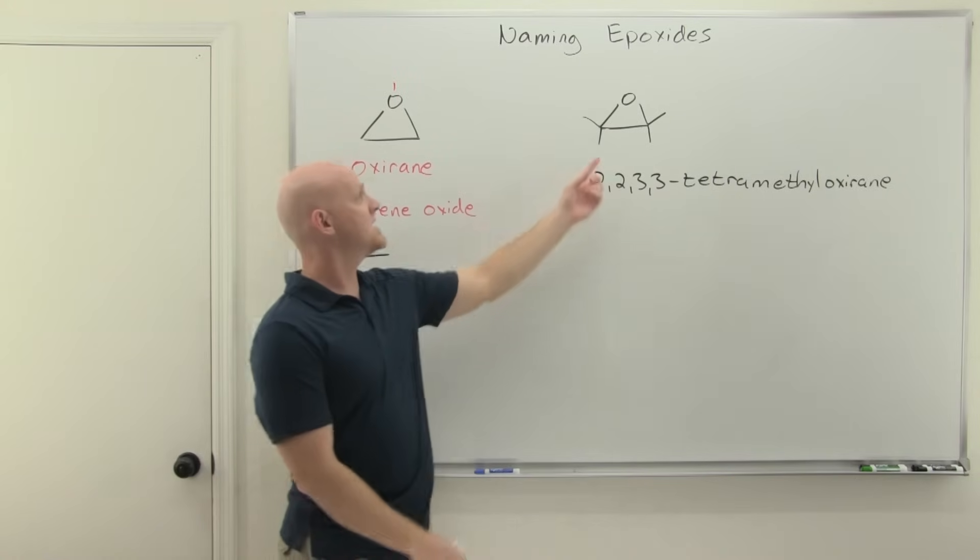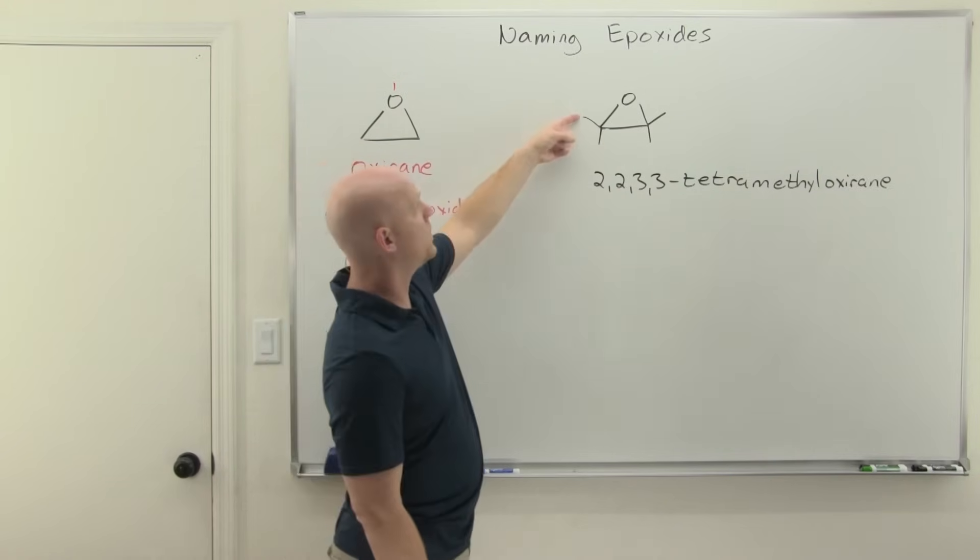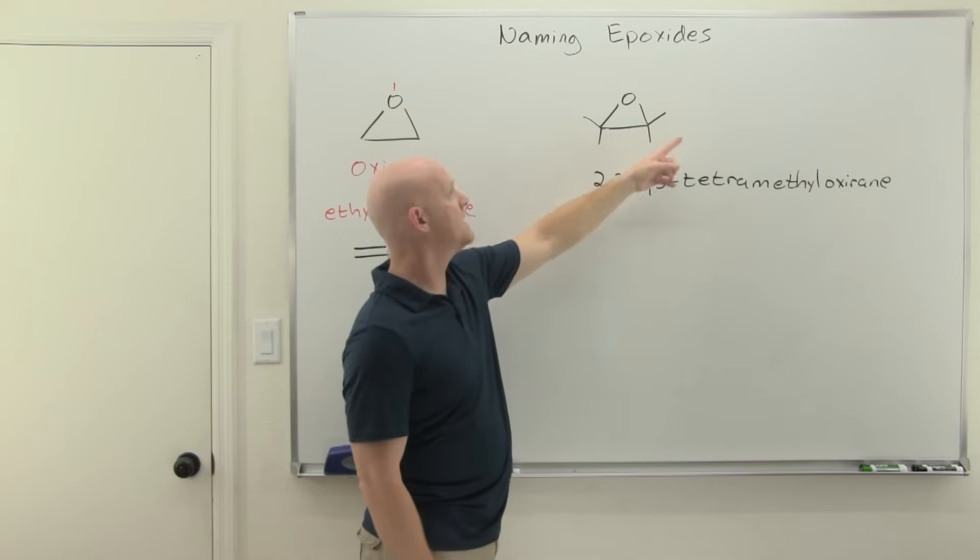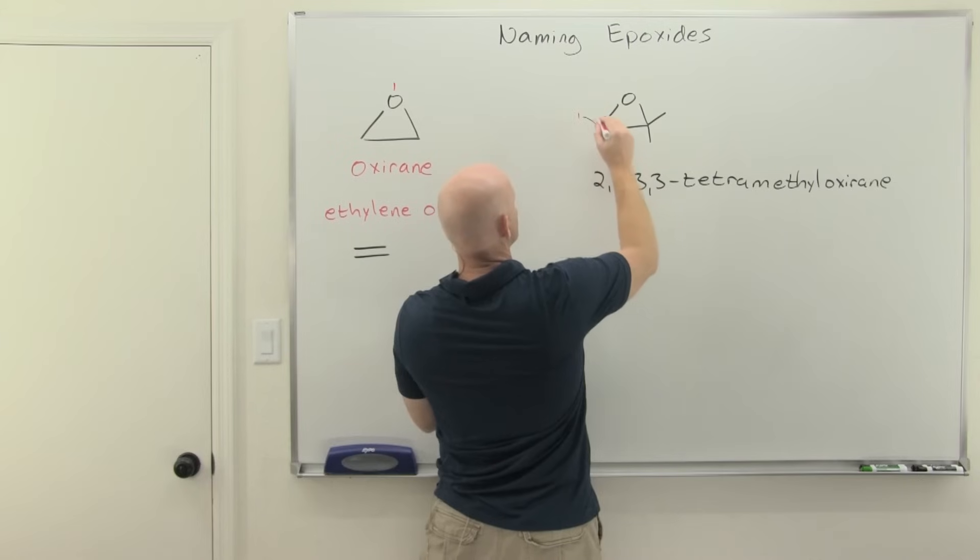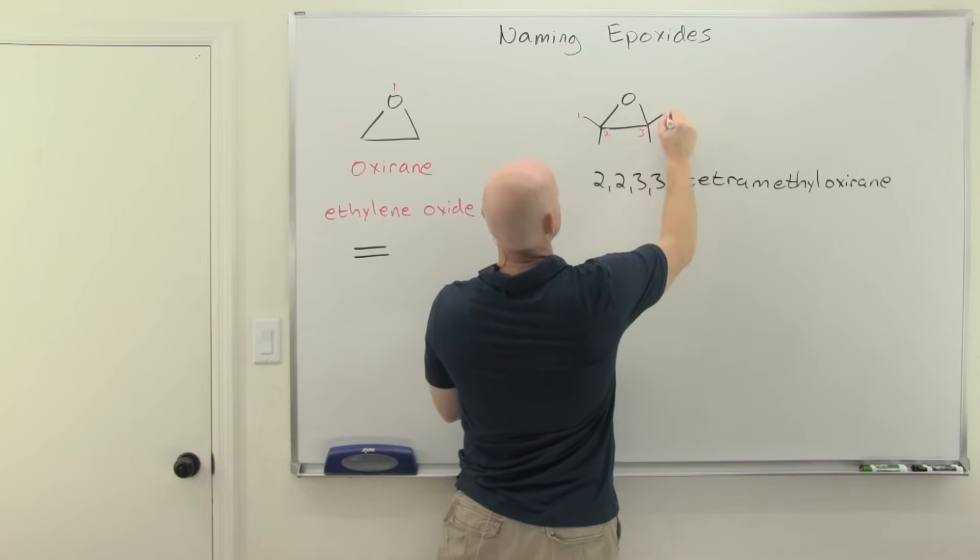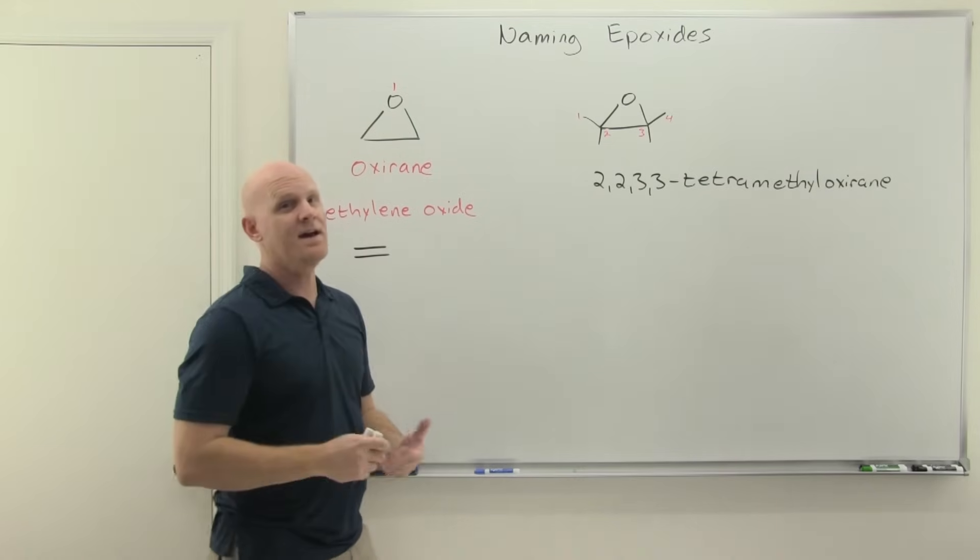Just longest continuous carbon chain that these two carbons are a part of. So in this case, it's going to be like one, two, three, four. And you could number it either way and you're going to get the same numbering system. Again, I made it symmetrical. And so in this case, your parent chain is going to be called butane, just a four-carbon chain.